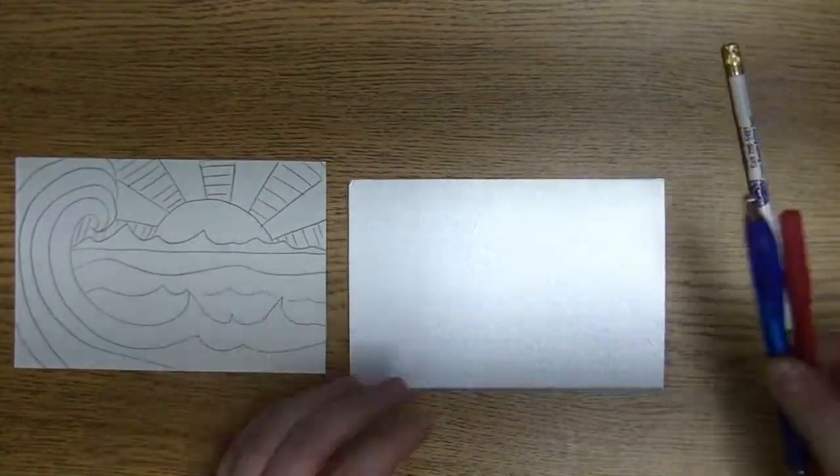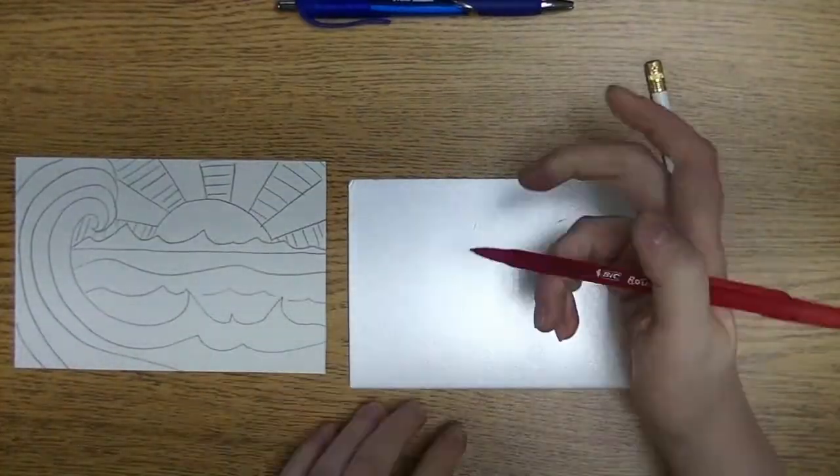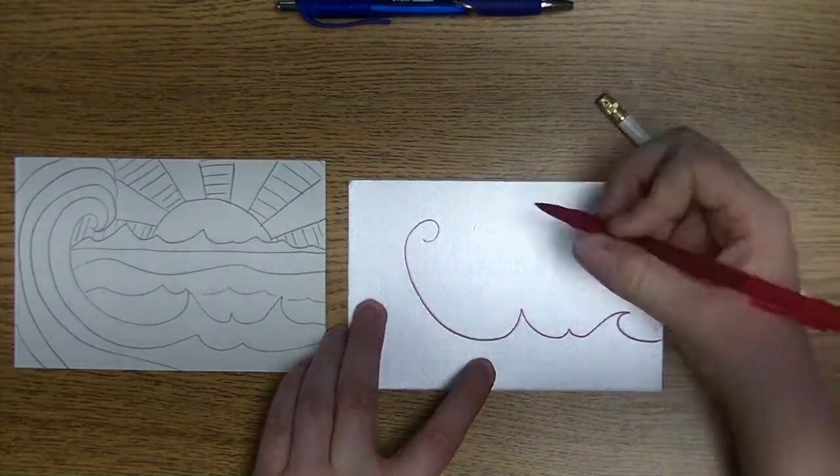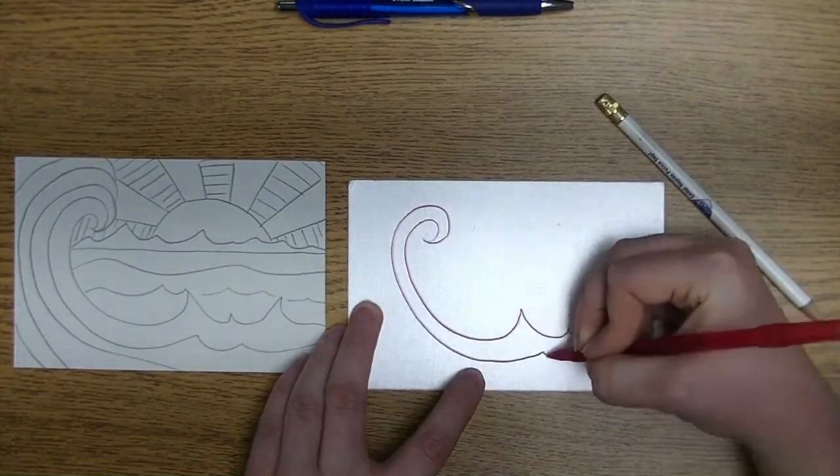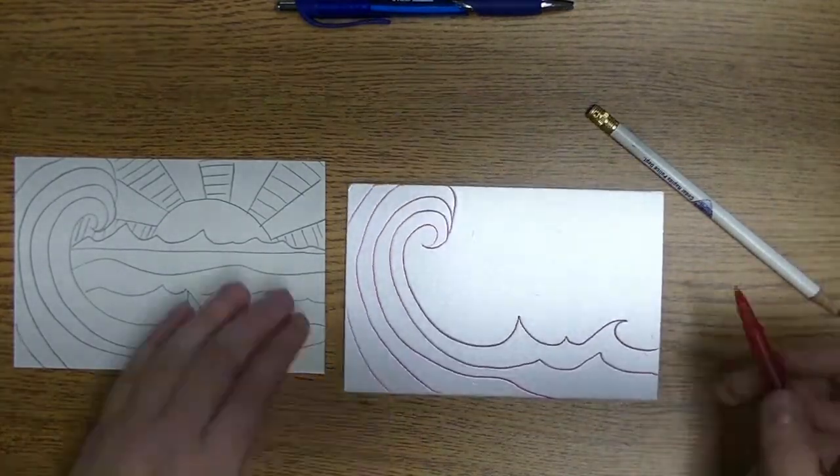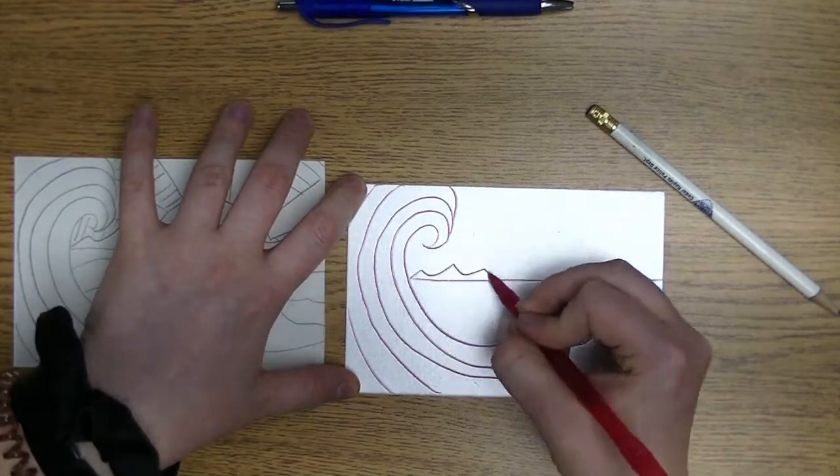After you've sketched it out in pencil on your styrofoam, you're going to use one color of an ink pen, which if you don't have we can provide for you, and draw that in.